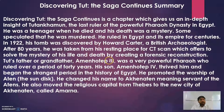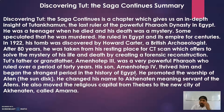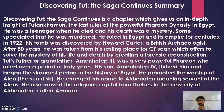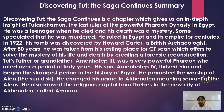Tut's father or grandfather, Amenhotep III, was a very powerful pharaoh. It is not clear from history whether Amenhotep III was the father or grandfather, which is why both are mentioned. He ruled for 40 years. His son Amenhotep IV succeeded him and began the strangest period in the history of Egypt. Amenhotep IV is considered a king who was quite negative in his approach toward history. He promoted the worship of Aten, the sun disk. He changed his name from Amenhotep IV to Akhenaten, meaning 'servant of the Aten.'